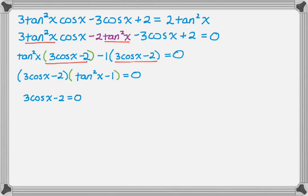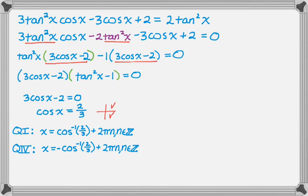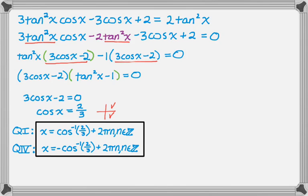Both groups have a factor of (3 cosine x minus 2), so I factor that out to get (3 cosine x minus 2)(tan squared x minus 1) equals 0. Setting the first factor to zero: cosine of x equals 2 thirds. Since cosine is positive, solutions come from quadrants 1 or 4. In quadrant 1, x equals inverse cosine of 2 thirds plus 2 pi n. In quadrant 4, x equals negative inverse cosine of 2 thirds plus 2 pi n. I should check both — and they do check; that's a calculator-type check.